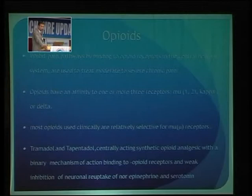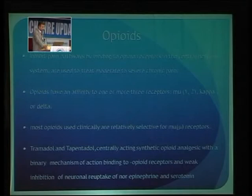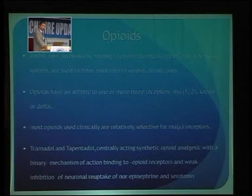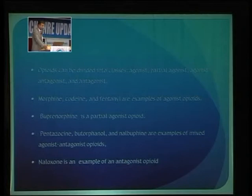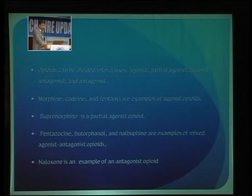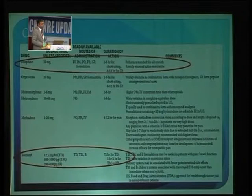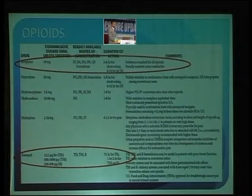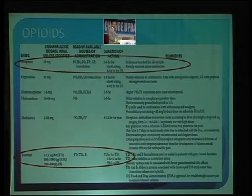I turn to opioids as my rescue. Opioids inhibit the pain pathway by acting on opioid receptors in the periaqueductal area — mu, kappa, and delta receptors; most clinically used opioids act on mu receptors. Tramadol and tapentadol are synthetic opioid analgesics with a binary action: they act as SNRIs as well as on opioid receptors. Opioids are classified as agonists, partial agonists, agonist-antagonists, and antagonists: morphine, codeine, and fentanyl are agonists; buprenorphine is a partial agonist; pentazocine is an agonist-antagonist; naloxone is an antagonist.